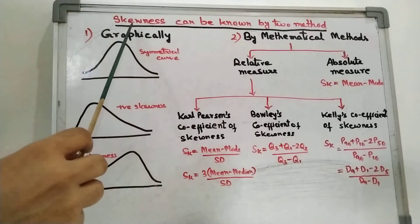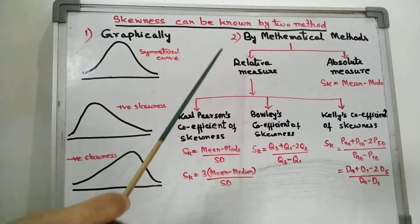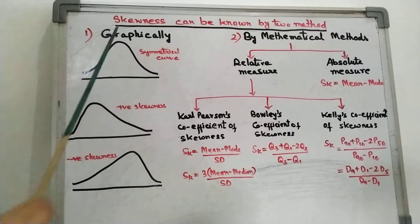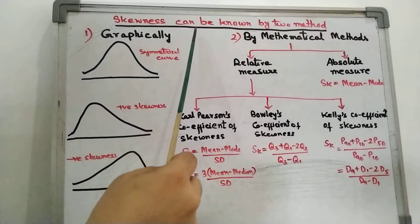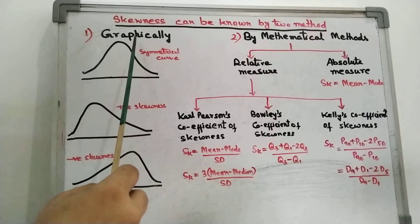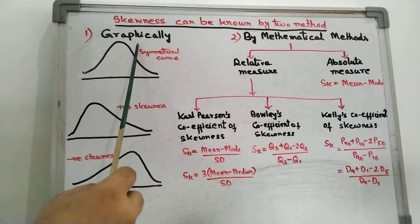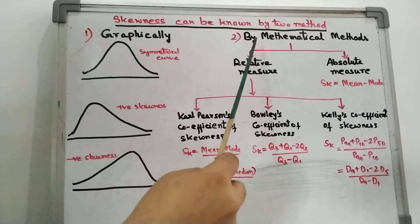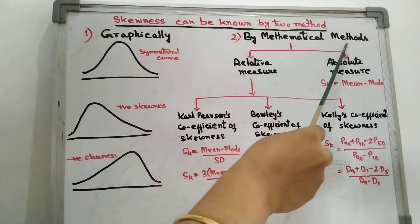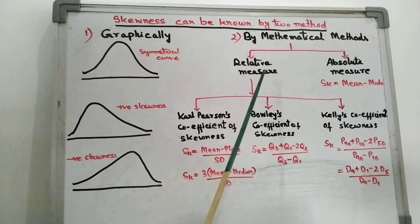Today's topic is skewness, which can be known by two methods — that means the measure of skewness. There are two methods to measure skewness in a distribution: one is the graphical method, and we can also find it by mathematical measures or mathematical methods.